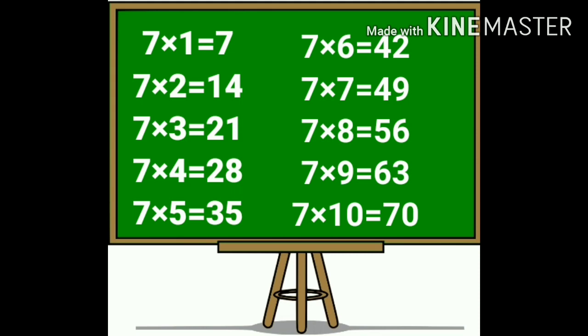Seven ones are seven. Seven twos are fourteen. Seven threes are twenty-one. Seven fours are twenty-eight. Seven fives are thirty-five. Seven sixes are forty-two. Seven sevens are forty-nine. Seven eights are fifty-six. Seven nines are sixty-three. Seven tens are seventy.